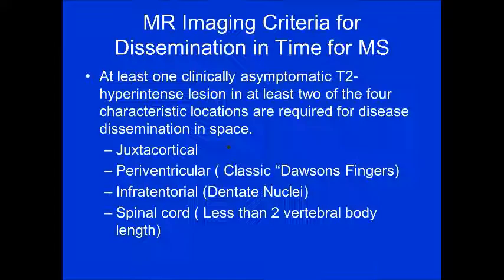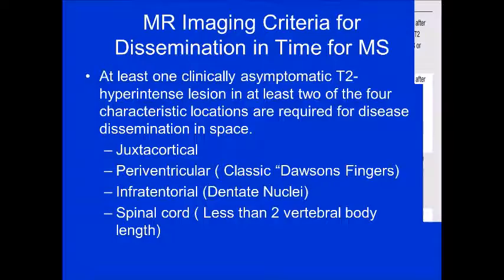The MRI criteria for dissemination in space for MS require at least one clinically asymptomatic T2 hyperintense lesion in at least two of four characteristic locations. Those locations are juxtacortical or subcortical, periventricular — which shows the classic Dawson's fingers appearance — infratentorial, particularly the dentate nuclei, and the spinal cord. Spinal cord lesions have a length of less than two vertebral bodies.